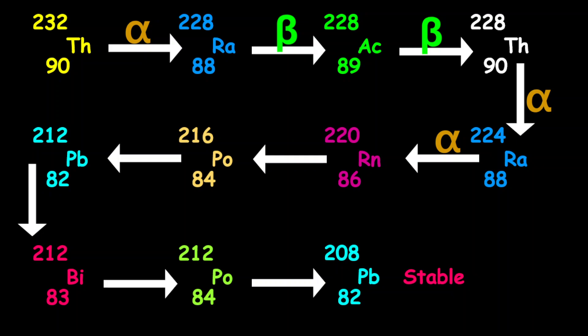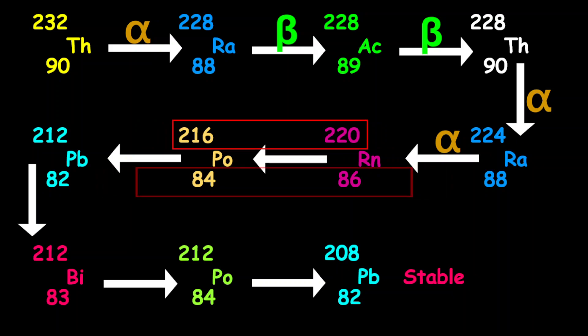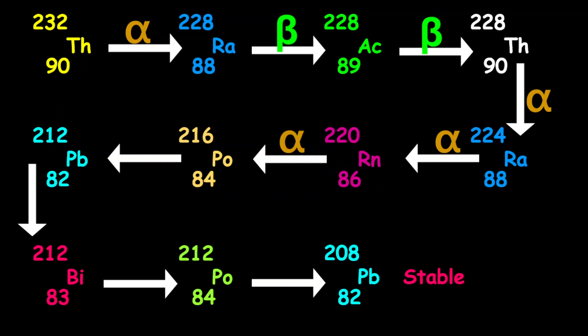Coming from radon into polonium-216, the mass number decreased by 4 and the proton number decreased by 2, so therefore this is another alpha decay.